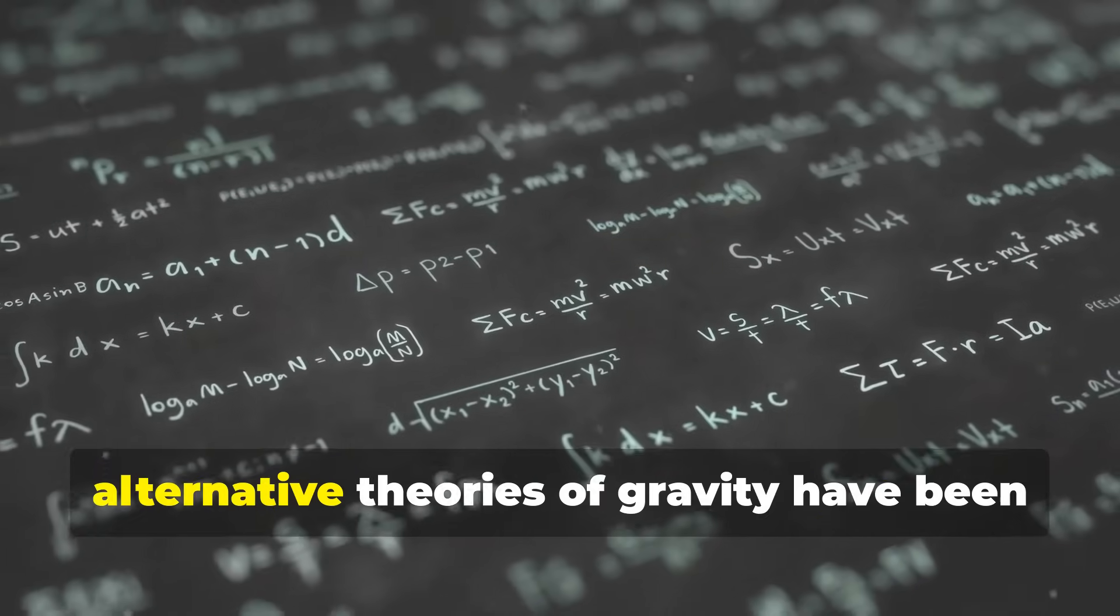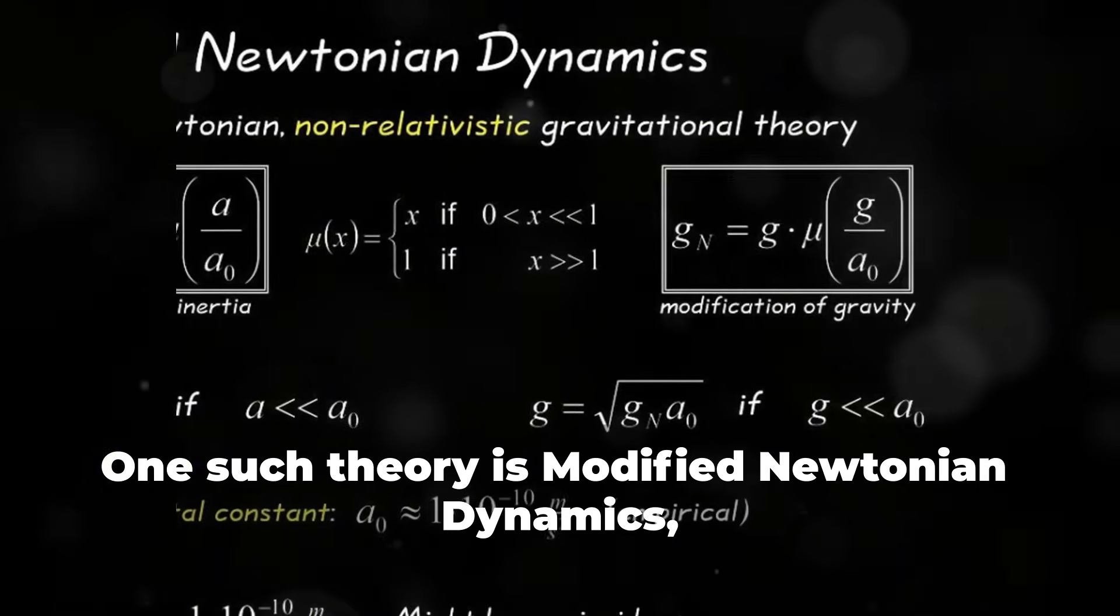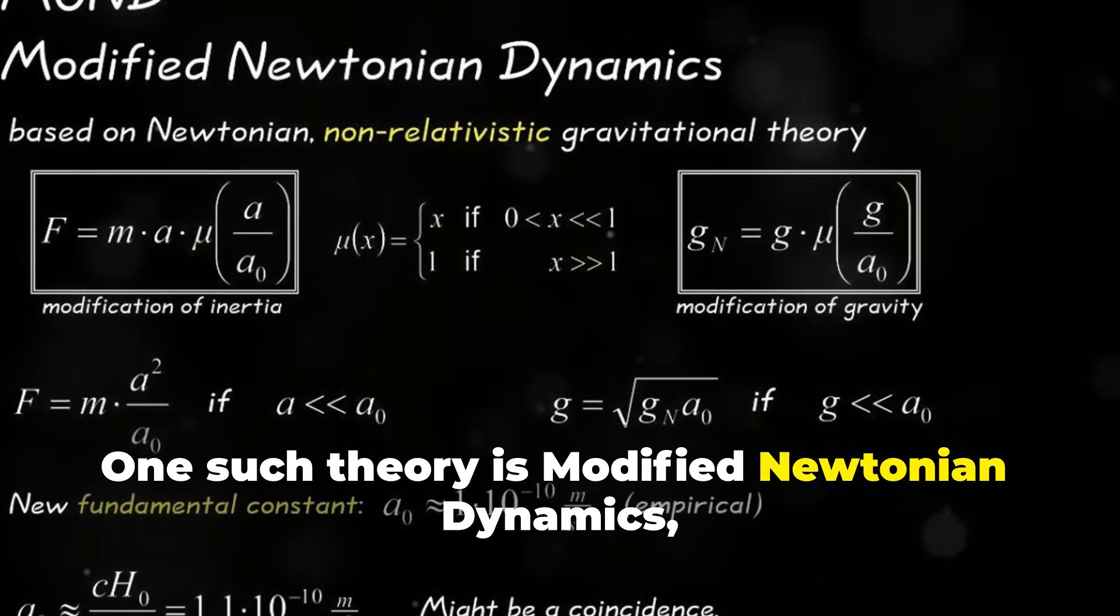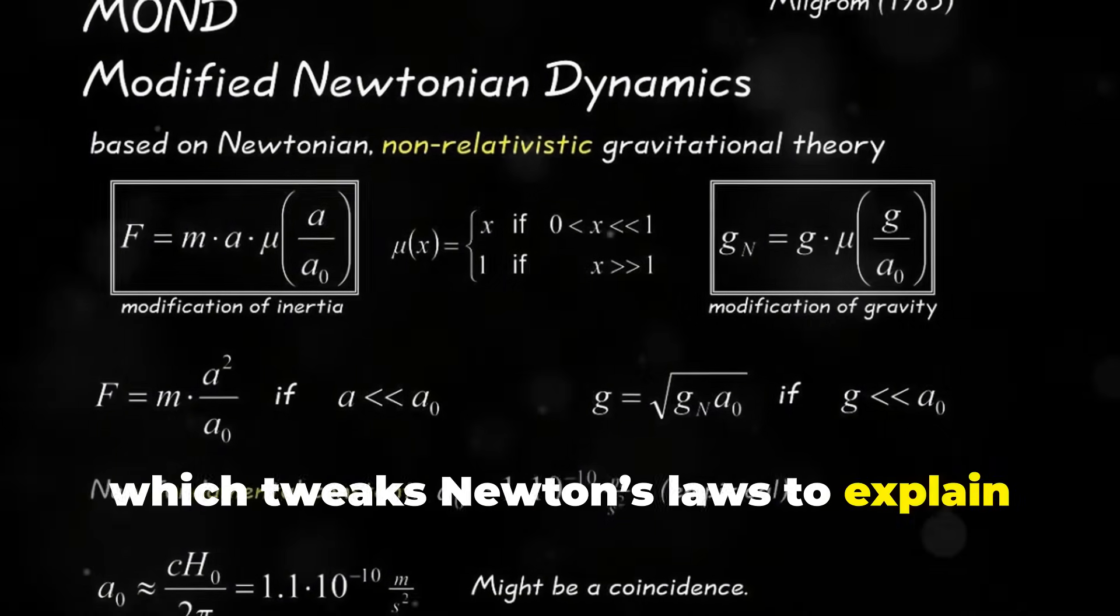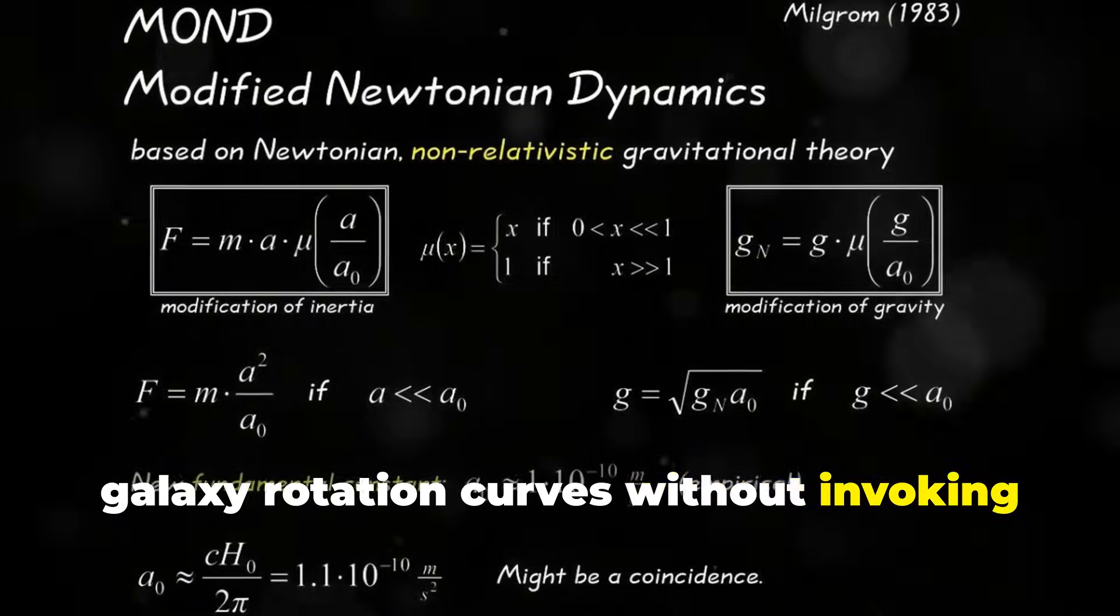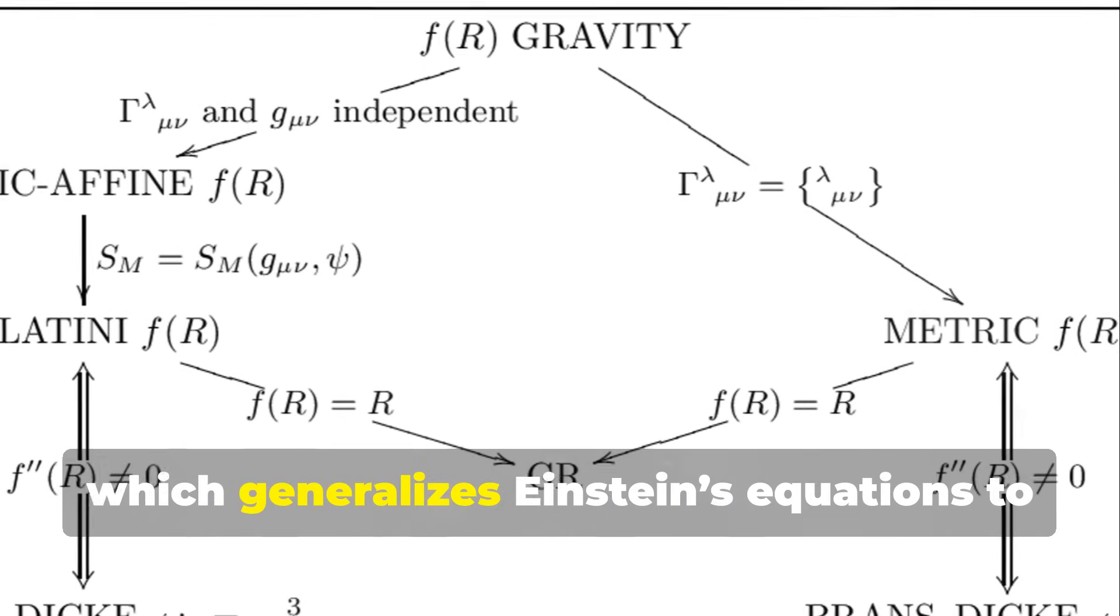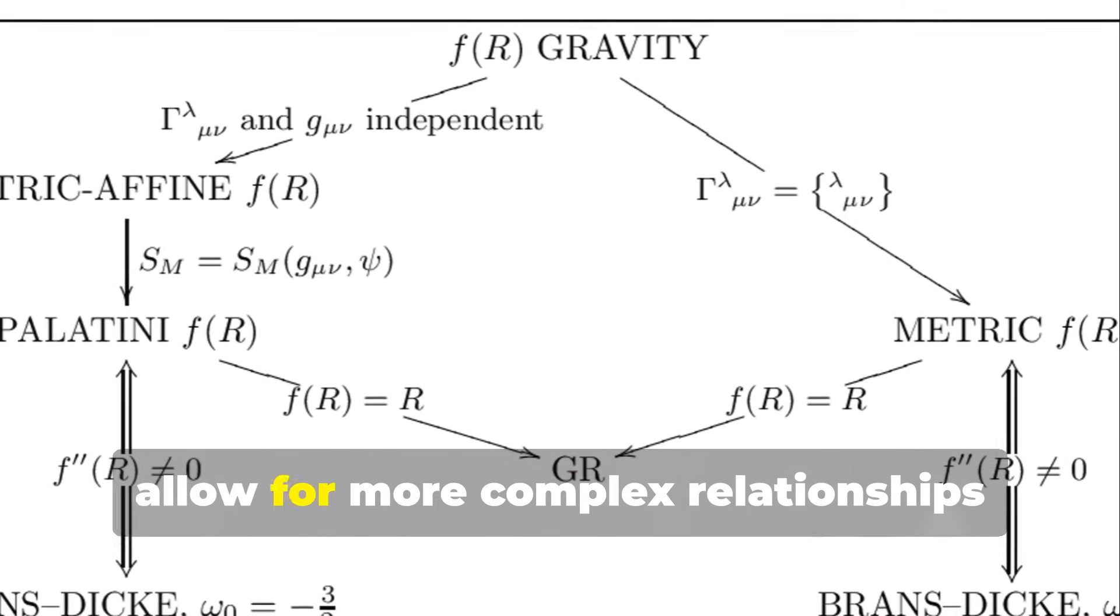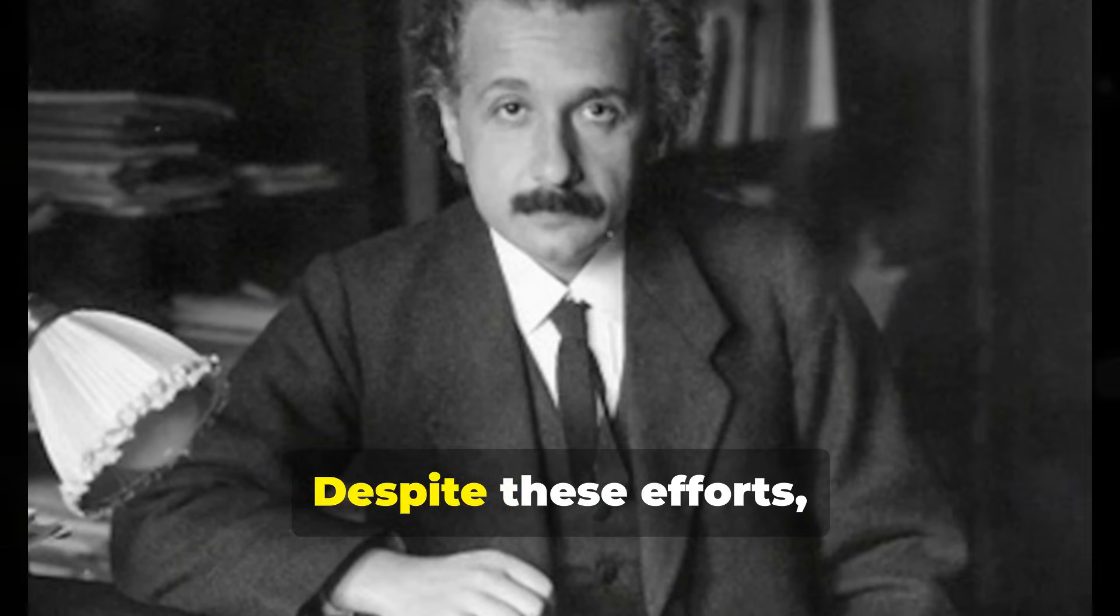Given these challenges, alternative theories of gravity have been proposed to extend or replace general relativity. One such theory is modified Newtonian dynamics, or MOND, which tweaks Newton's laws to explain galaxy rotation curves without invoking dark matter. Another is the f(R) theory, which generalizes Einstein's equations to allow for more complex relationships between matter and spacetime curvature.